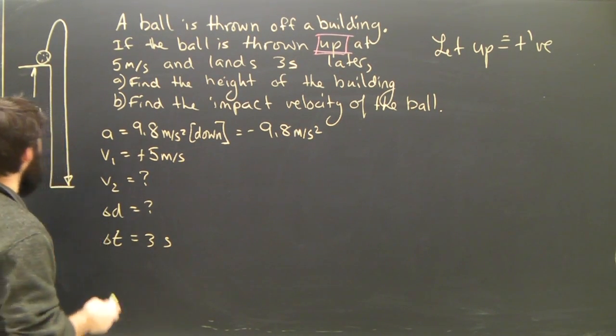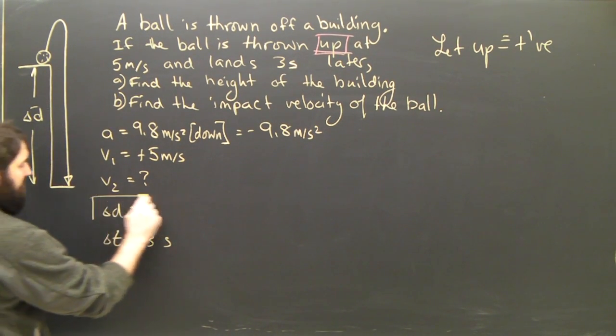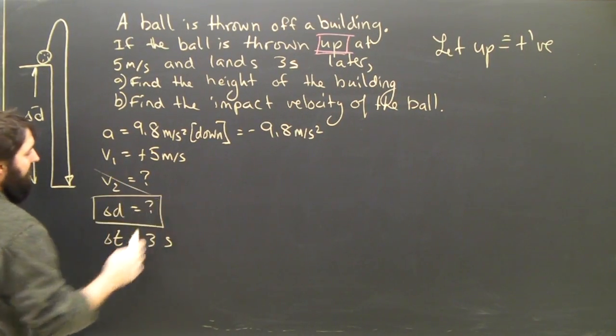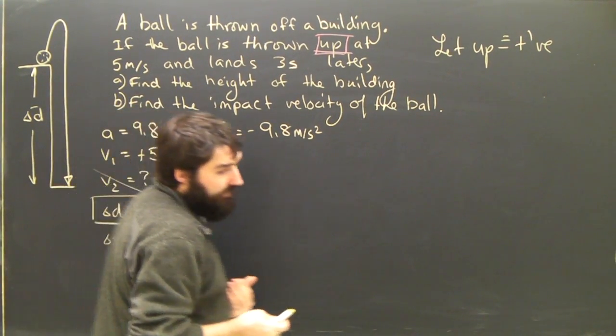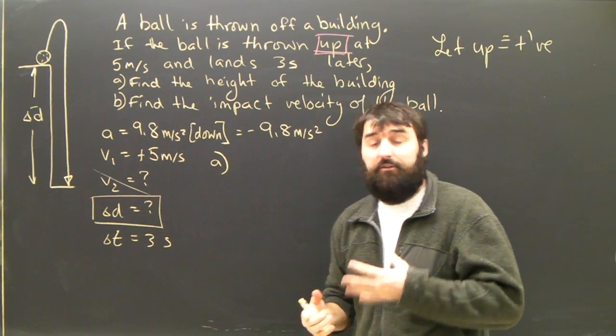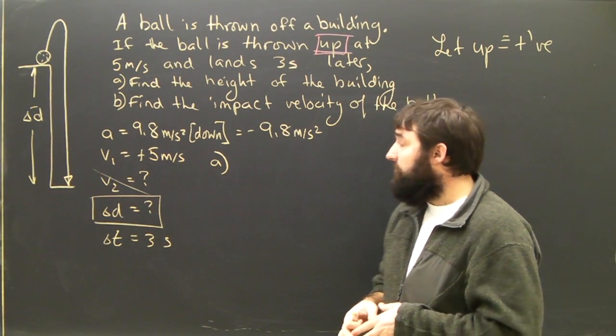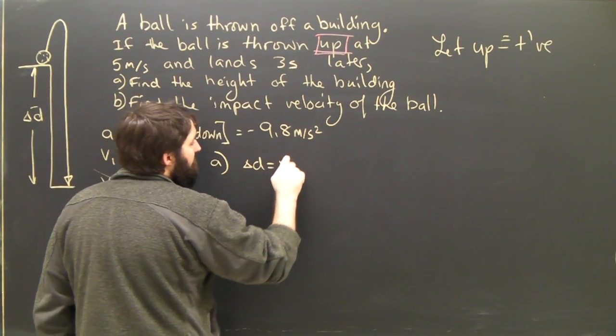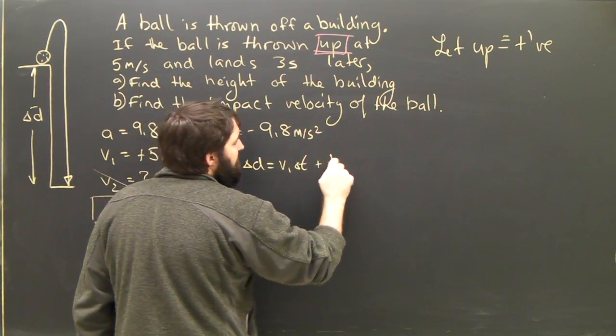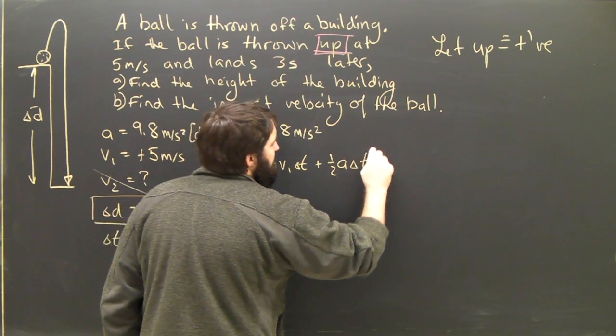Now, for part A, we are trying to find D, and we don't care about V2. So, for part A, which equation are we going to use? We're going to use the one that does not have V2, which is equation number 3. Again, delta D equals V1T plus 1 half AT squared.